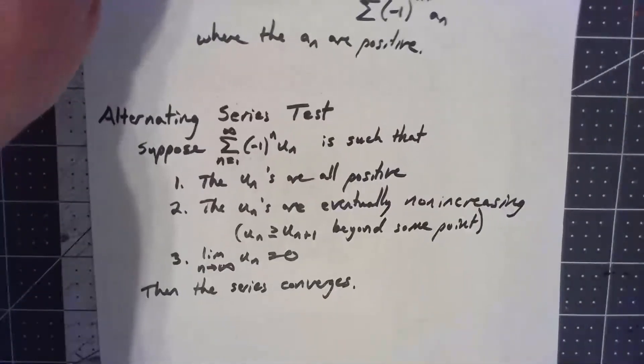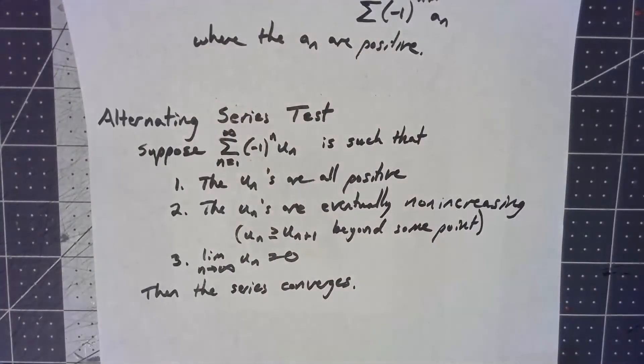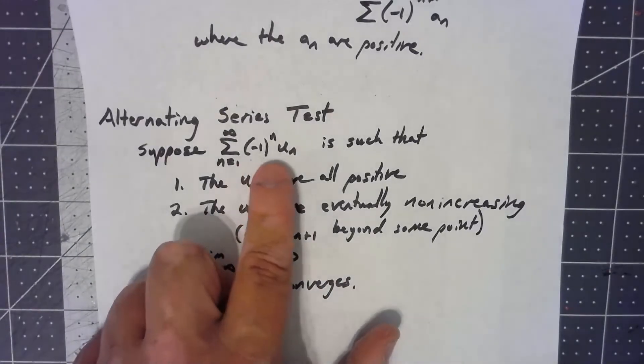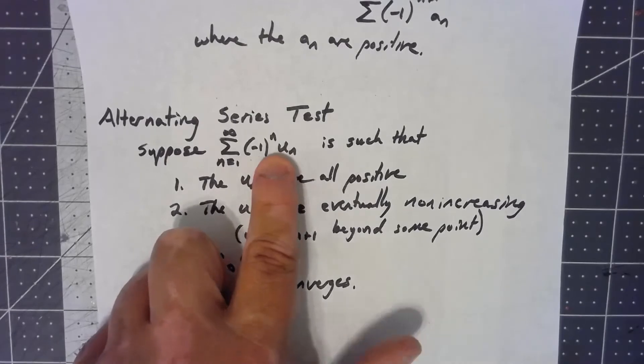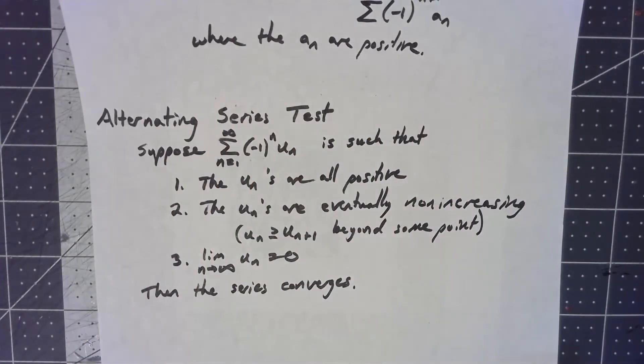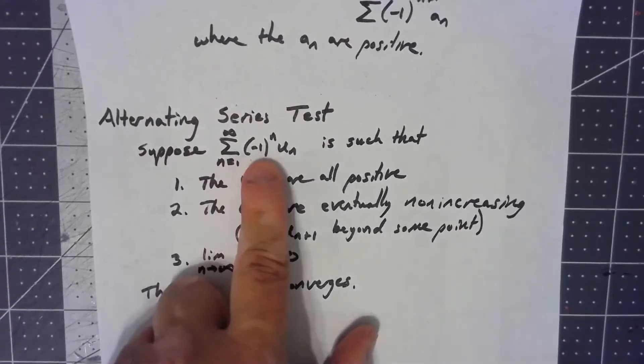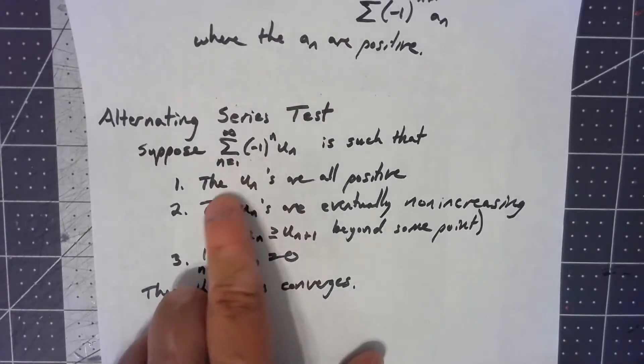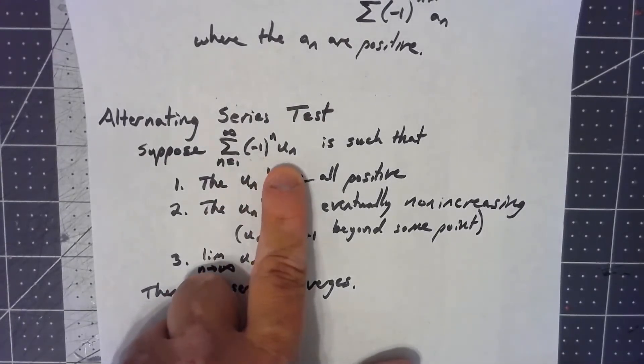We have something called the alternating series test. And the basic idea is suppose we've got an alternating series, we've got one of these negative one to the n's. And while the theorem is written with negative one to the n, it doesn't change things if it was a negative one to the n plus one. The whole point though, is that we've got one of these alternating things. And just like I was saying before, the non-sign part is always positive.